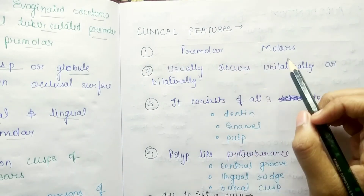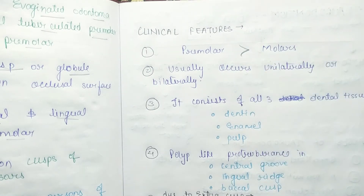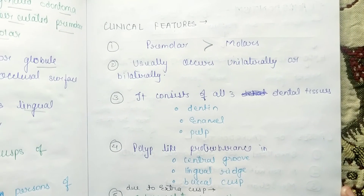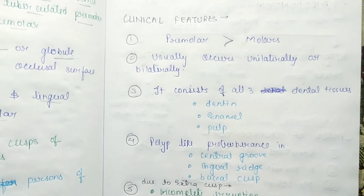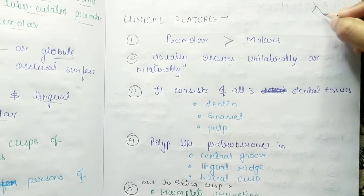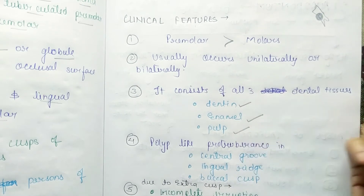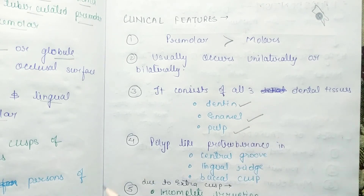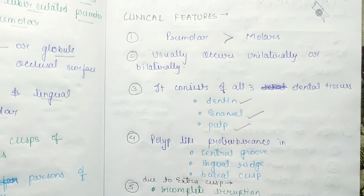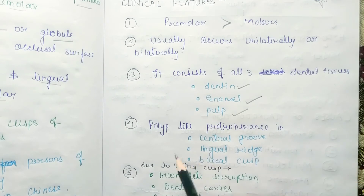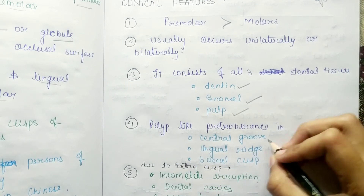Looking at the clinical features: it occurs in premolars and molars, but is most commonly seen in premolars. It usually occurs unilaterally or bilaterally. It consists of three dental tissues — dentine, enamel, and pulp — just as we discussed with enamel pearls, making it similar in composition to a normal tooth.